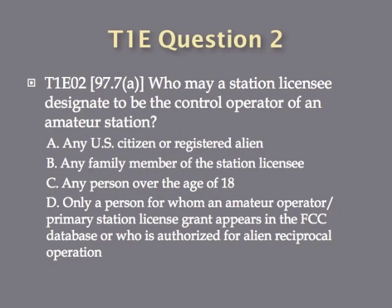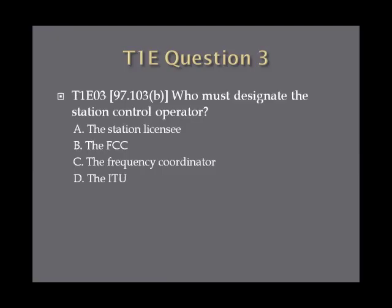Question 2: Who may a station licensee designate to be the control operator of an amateur station? A, any U.S. citizen or registered alien. B, any family member of the station licensee. C, any person over the age of 18. Or D, only a person for whom an amateur operator primary station license grant appears in the FCC database or who is authorized for alien reciprocal operation. Question 3: Who must designate the station control operator? A, the station licensee. B, the FCC. C, the frequency coordinator. Or D, the ITU.